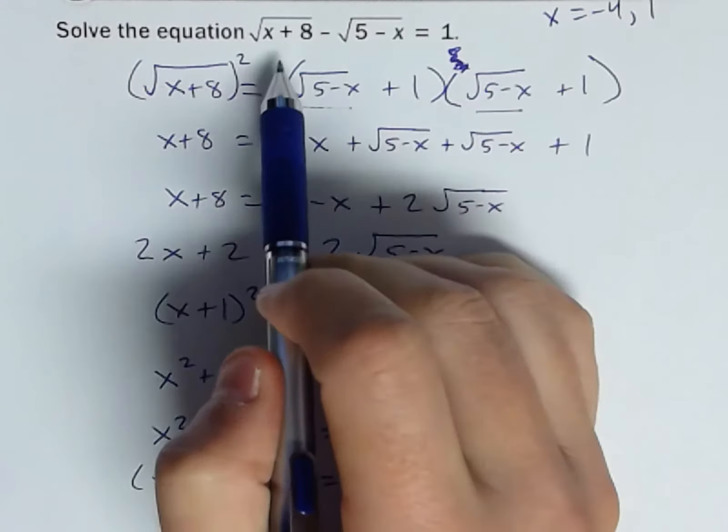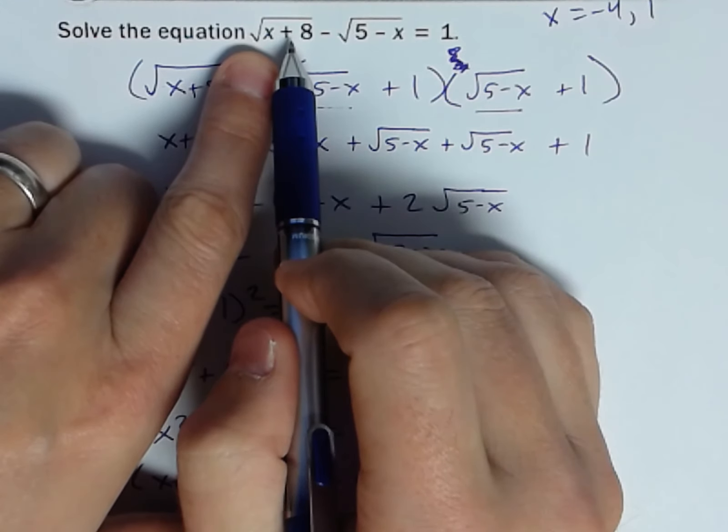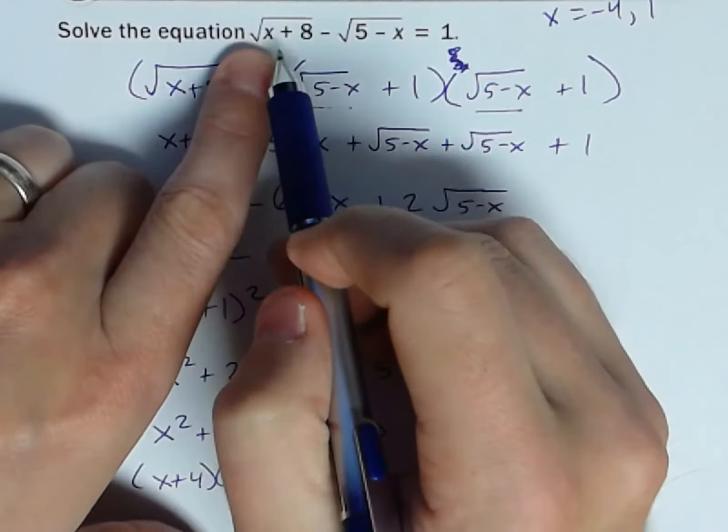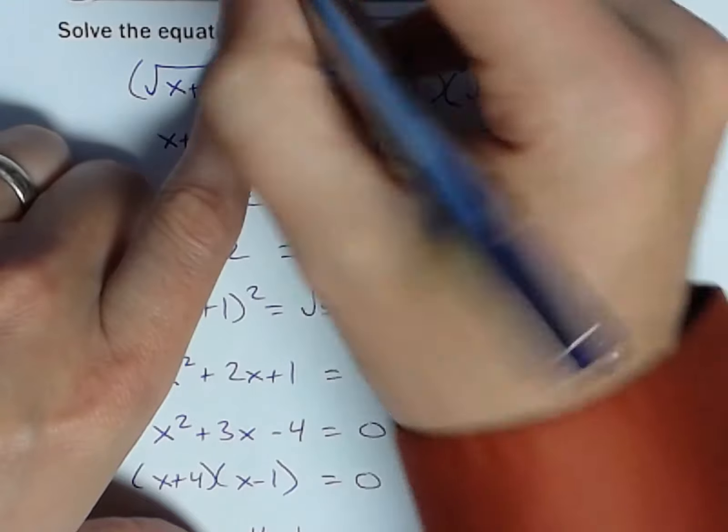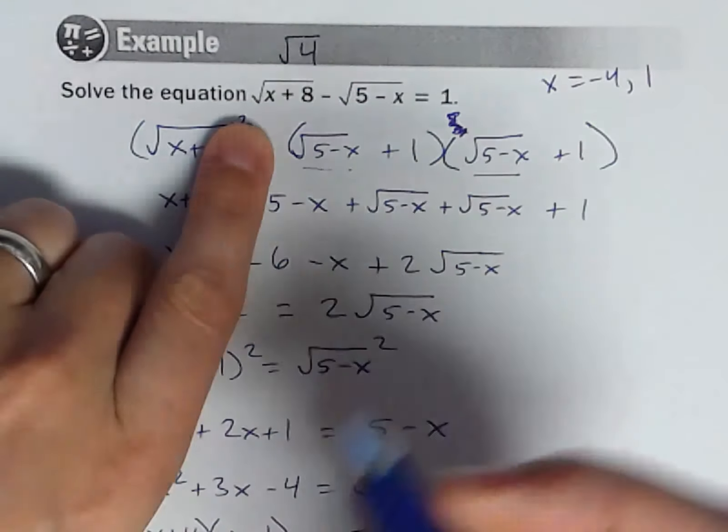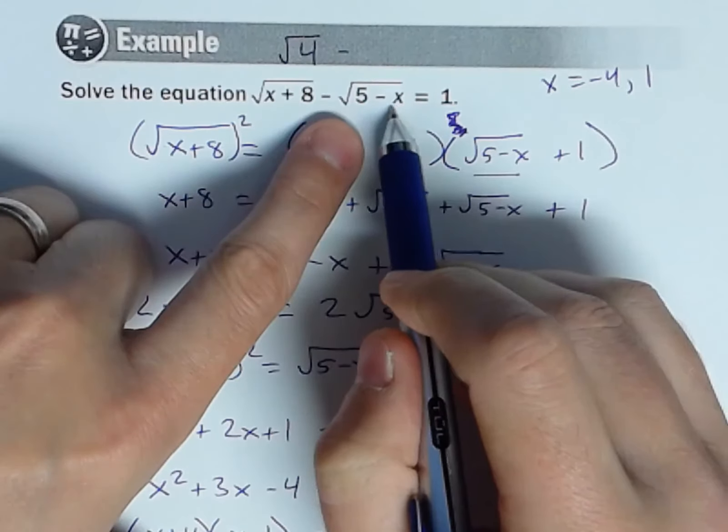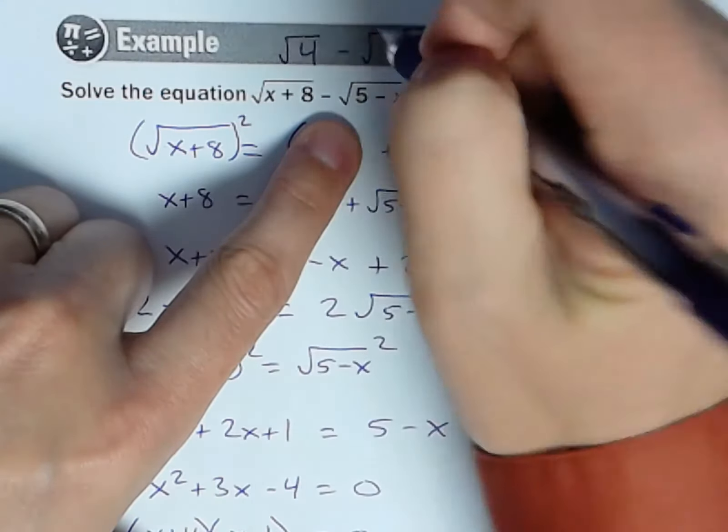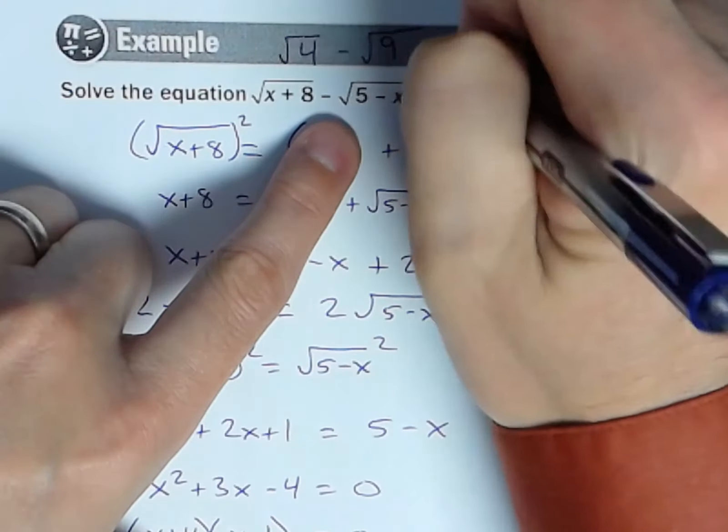So if I go back and plug a negative 4 into here, so I would get negative, in fact let me. Yeah that's okay. Let me plug negative 4 in. So negative 4 plus 8, so that would be square root of 4, writing above there. So square root of 4 minus, and if I plug negative 4 in here, I would get 5 minus negative 4, so 9 equals 1.